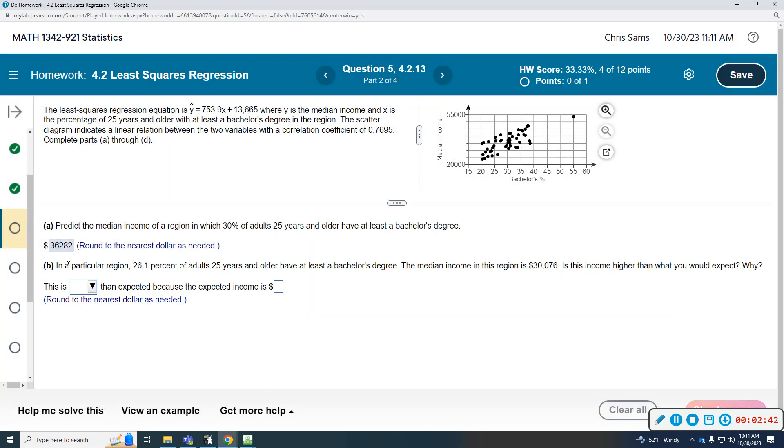In Part B, in a particular region, 26.1% of those 25-year-olds have at least a bachelor's degree. The median income in the region is $30,076. Is this income higher than what you would expect?